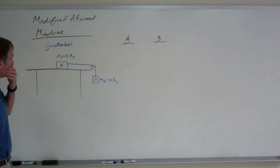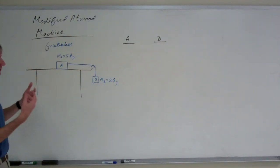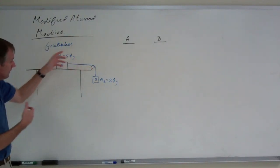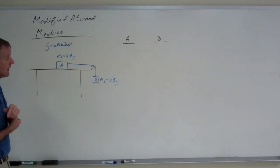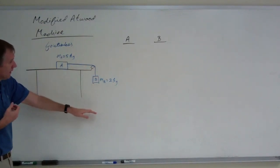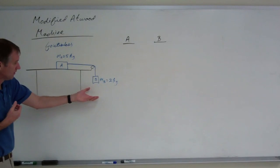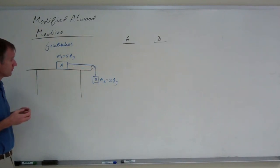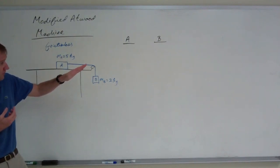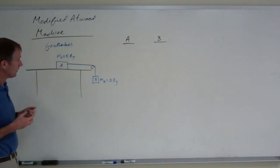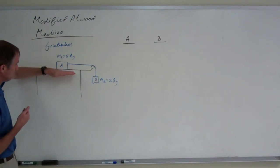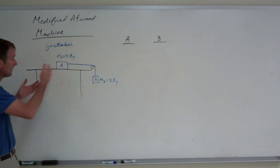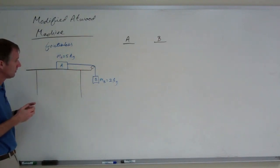A modified Atwood machine is an Atwood machine with a pulley. A standard Atwood machine has a pulley and two objects on either side, but it's modified in the sense that only one of the objects is hanging in space — that's block B. Block A is on a horizontal surface. The surface could be angled, but we're responsible for the flat horizontal case. Block A is not in space; it's going to slide on a frictionless horizontal surface.